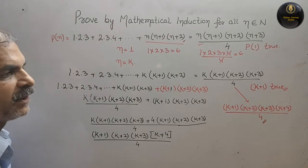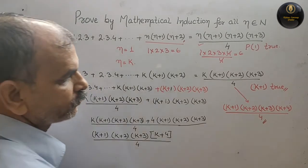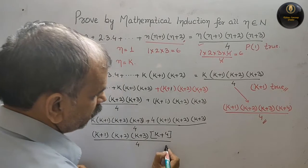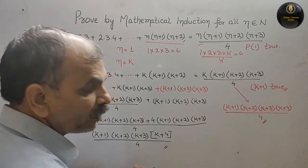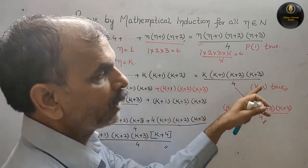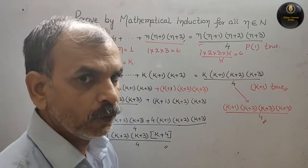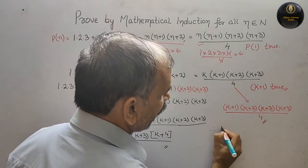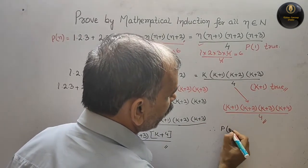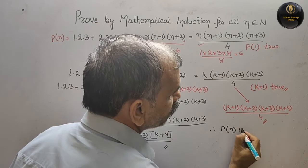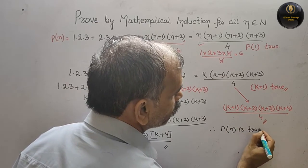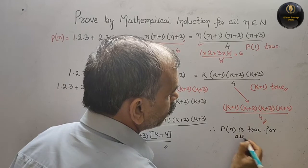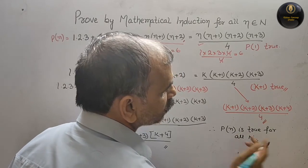So now we can see that the LHS equals the RHS, which is (k+1)(k+2)(k+3)(k+4)/4. Therefore P(k+1) is true. Hence P(n) is true for all natural numbers.